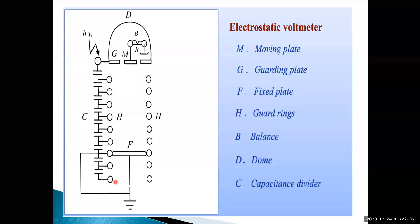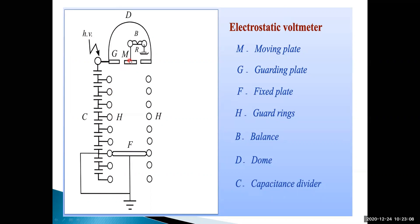These are the guard rings. By providing these guards, we distribute the electric field uniformly - uniform electric field distribution is the purpose. In between the moving plate and fixed plate, to maintain uniform electric field, the guards are used on both sides. The moving plate moves in the downward and upward direction based on voltage - based on attraction between the fixed plate and moving plate.